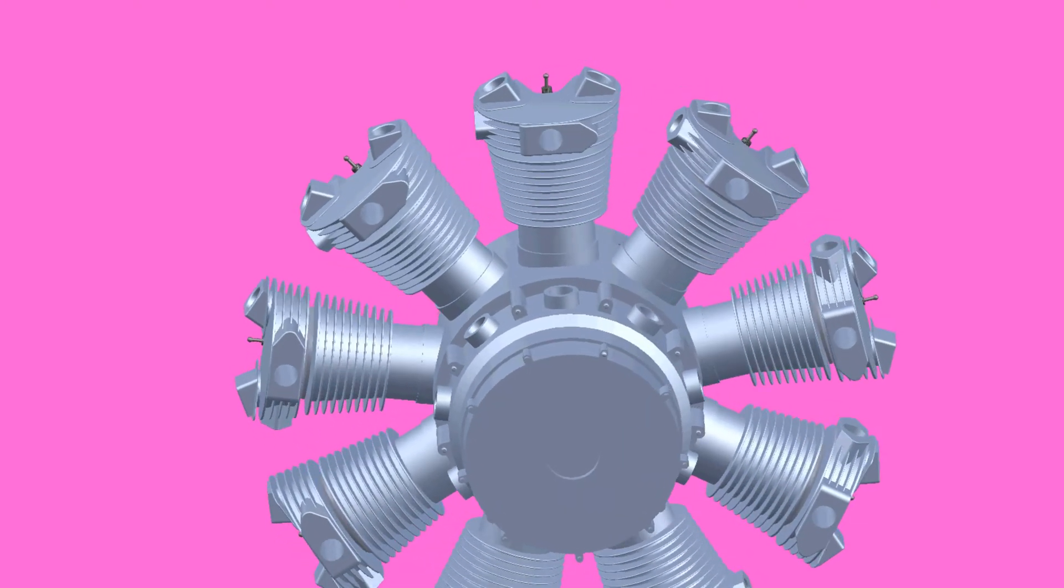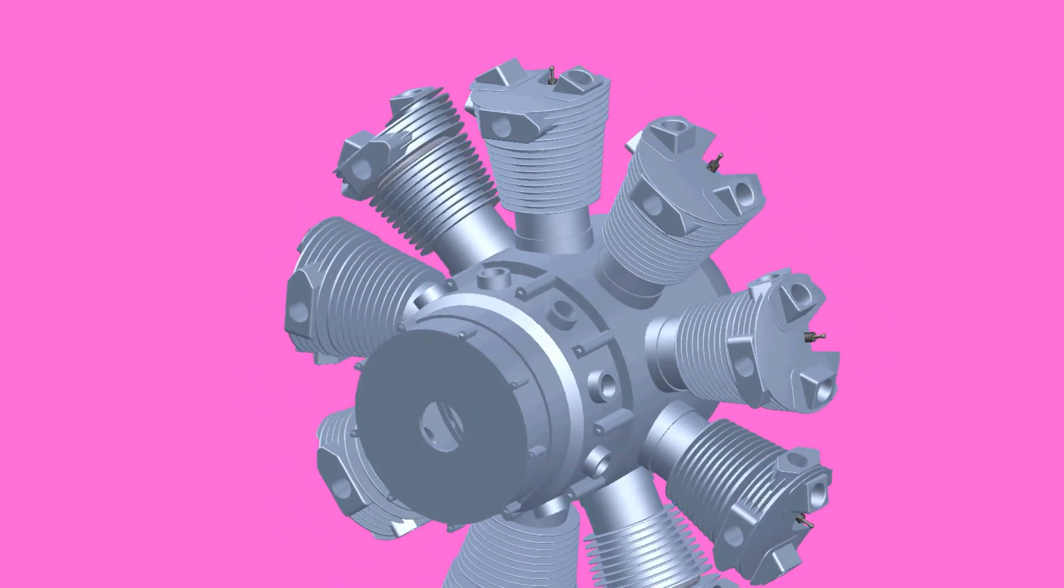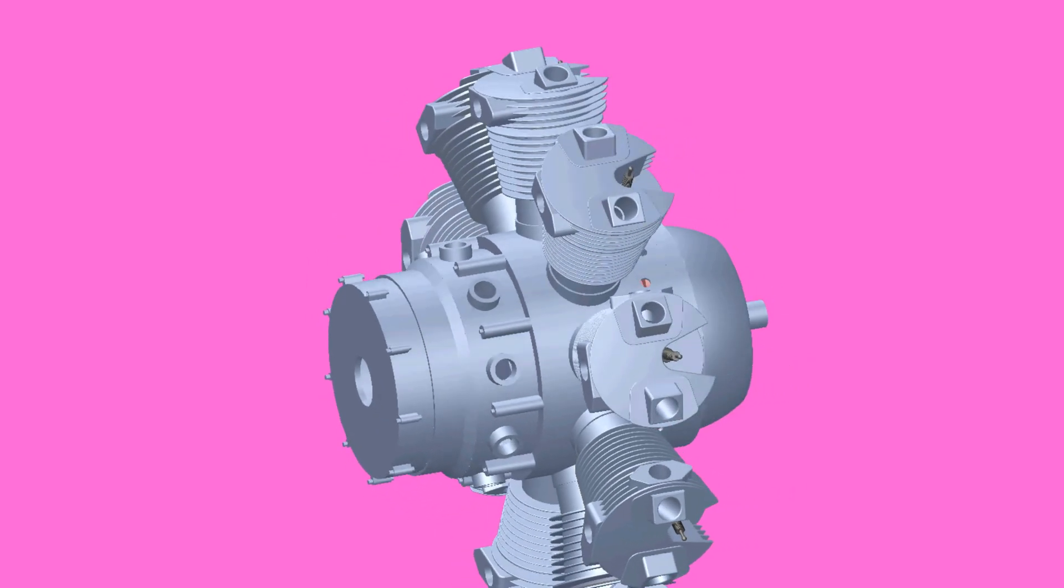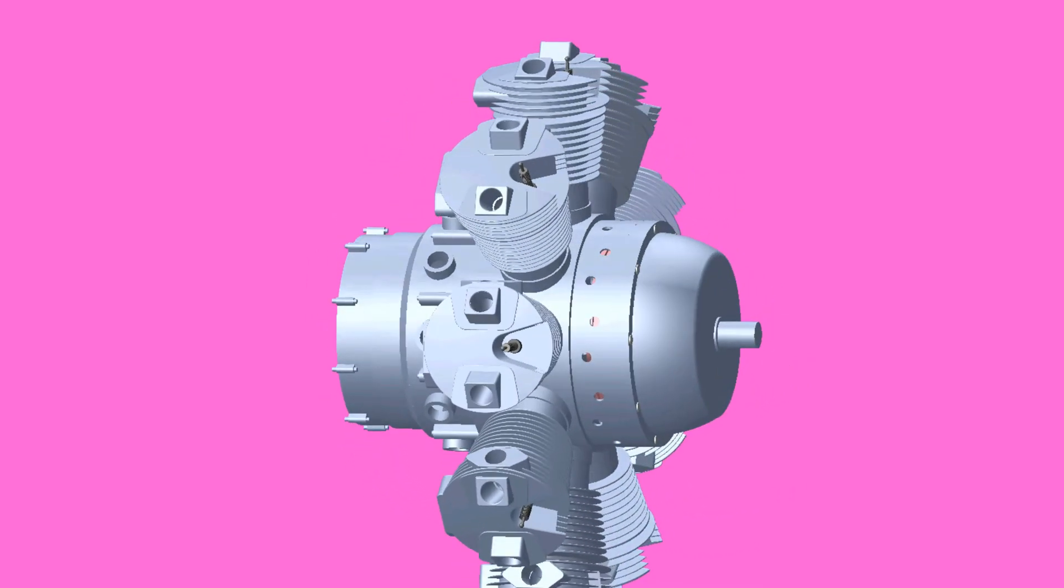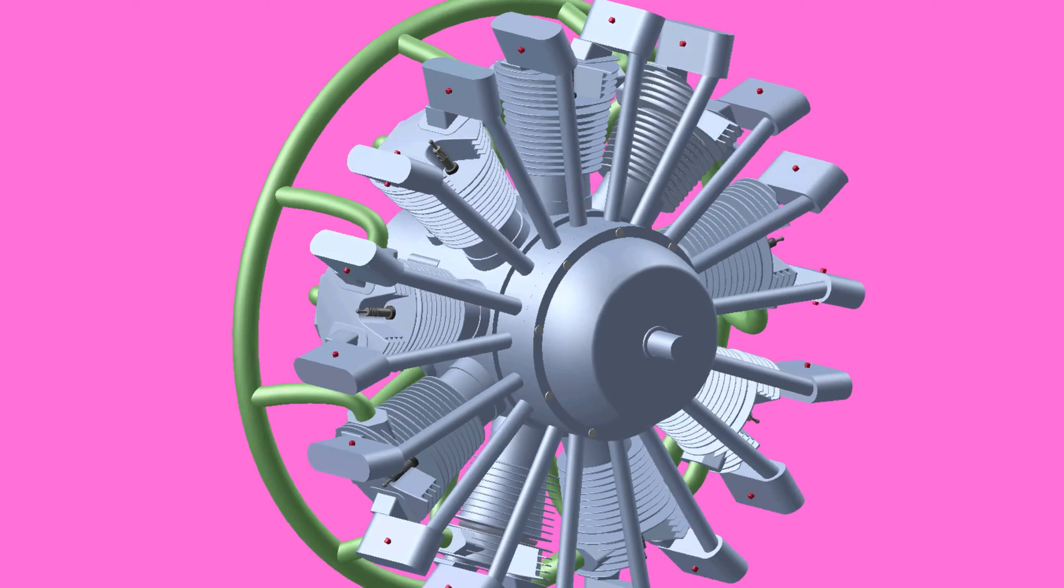The radial engines have odd number of cylinders, so that a consistent every other piston firing order can be maintained, providing smooth operation.